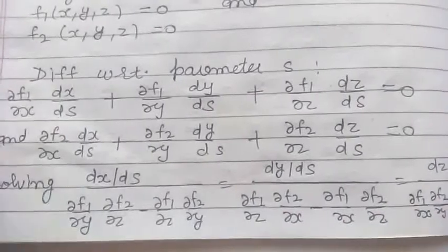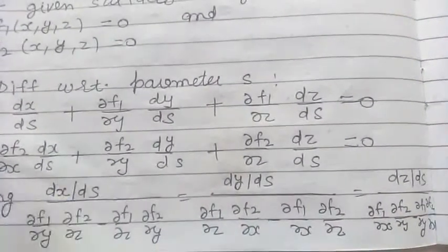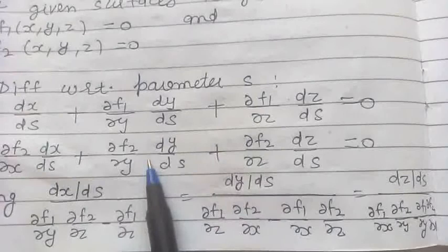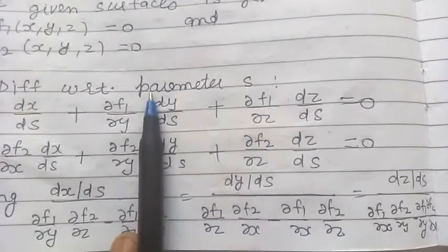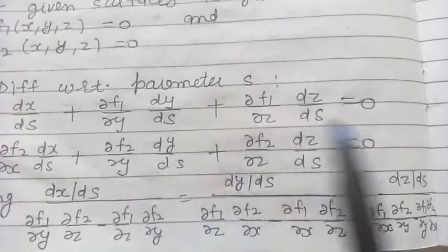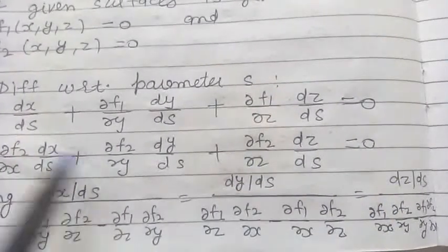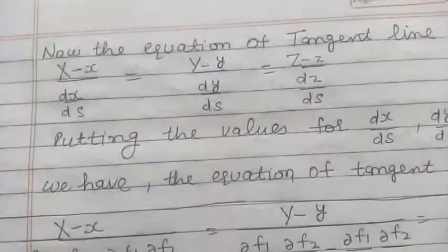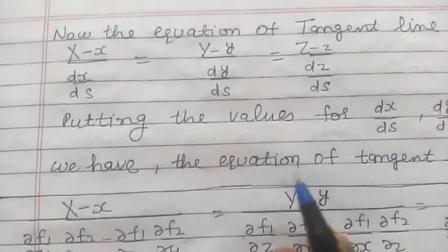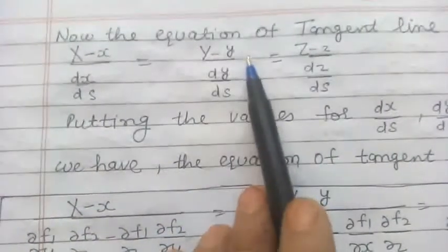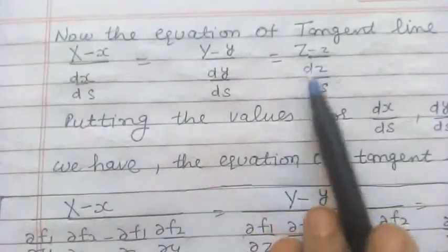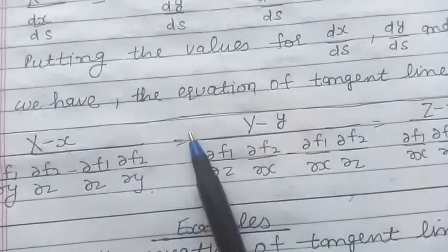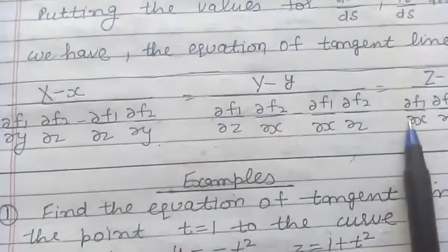Solving these equations by cross multiplication, we obtain dx/ds, dy/ds, and dz/ds in terms of the partial derivatives. Substituting these values into the Cartesian equation of the tangent line — (X − x)/(dx/ds) = (Y − y)/(dy/ds) = (Z − z)/(dz/ds) — we get the equation of the tangent line for the curve of intersection of the two surfaces.